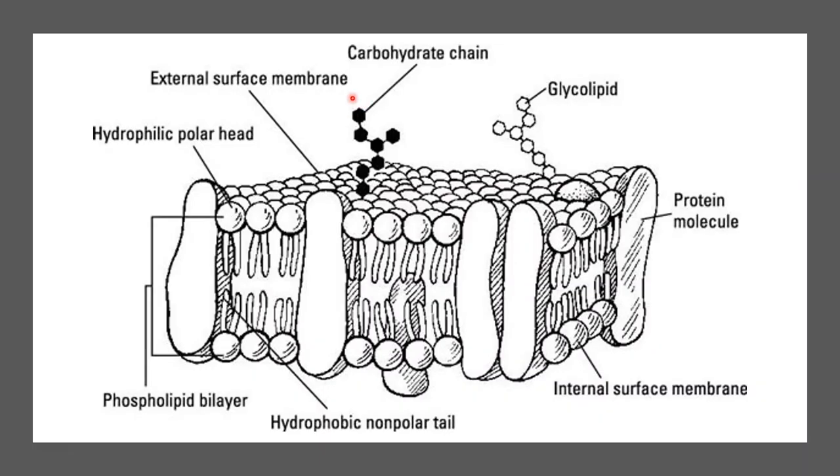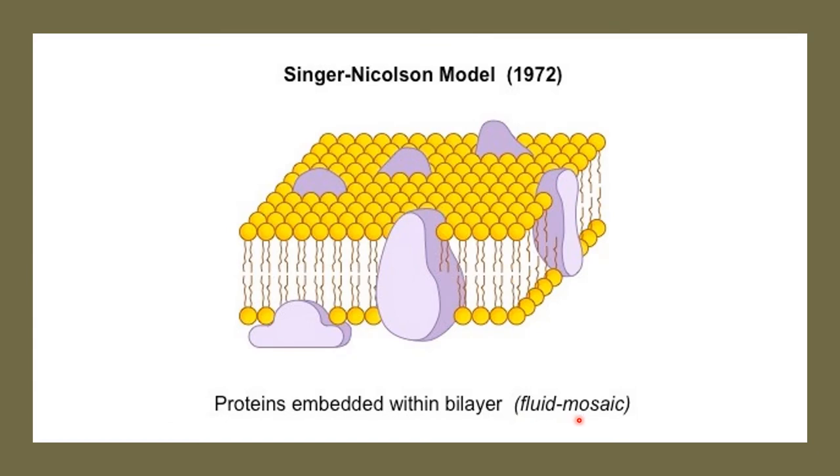The arrangement of various biomolecules such as carbohydrates, lipids and proteins can be explained as follows. The fluid mosaic model proposed by Singer and Nicholson in 1972 has been widely accepted to explain the arrangement of various biomolecules in the cell membrane.